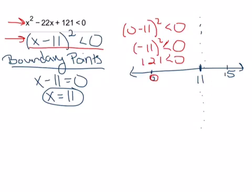Alright, 121 is less than zero. We need to ask ourselves, is that a true or a false statement? So we have 121 is less than zero. That's definitely a false statement. We're only looking for true statements here, so this region to the left of 11 is not going to be our answer.